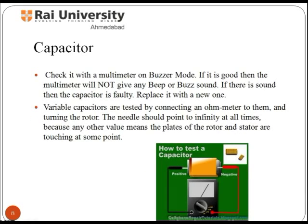A capacitor contains at least two electric conductors separated by an insulator. It is expressed as the ratio of electric charge Q on each conductor to the potential difference V between them, and it is used to store energy in an electric field. To test a capacitor, check it with a multimeter in buzzer mode. If it is good, the multimeter will not give a beep or buzz sound. If there is sound, it means the capacitor is faulty — replace it with a new one.